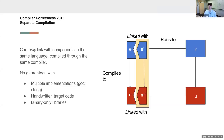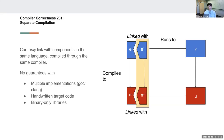The gold standard — what a lot of the literature focuses on — is compositional compiler correctness. Here we want some way to link with things not necessarily in the source language. We have a foreign component f: if e linked with f runs in the source to v, and m (the compilation of e) linked with the same f runs to u, then u and v should still be related. Crucially, f can be in either the source or target language.